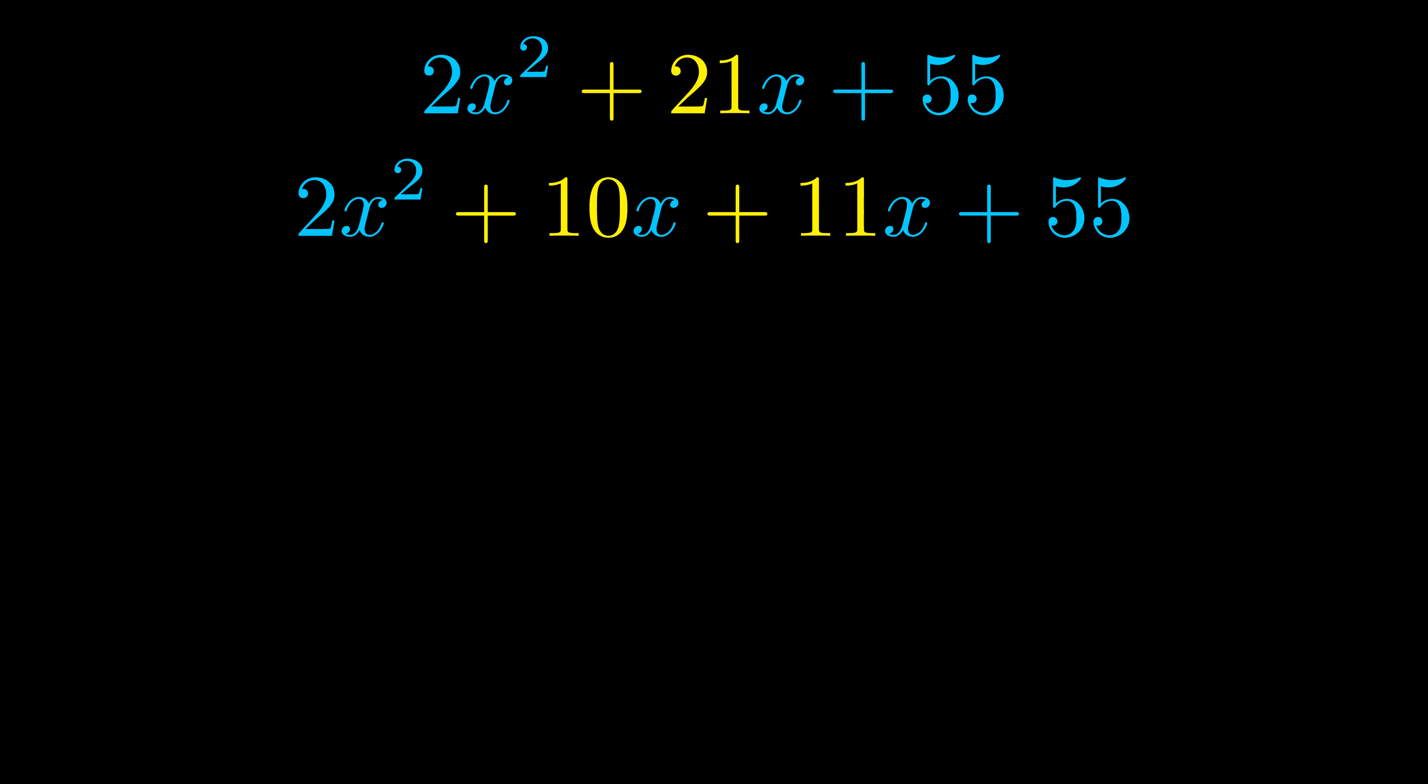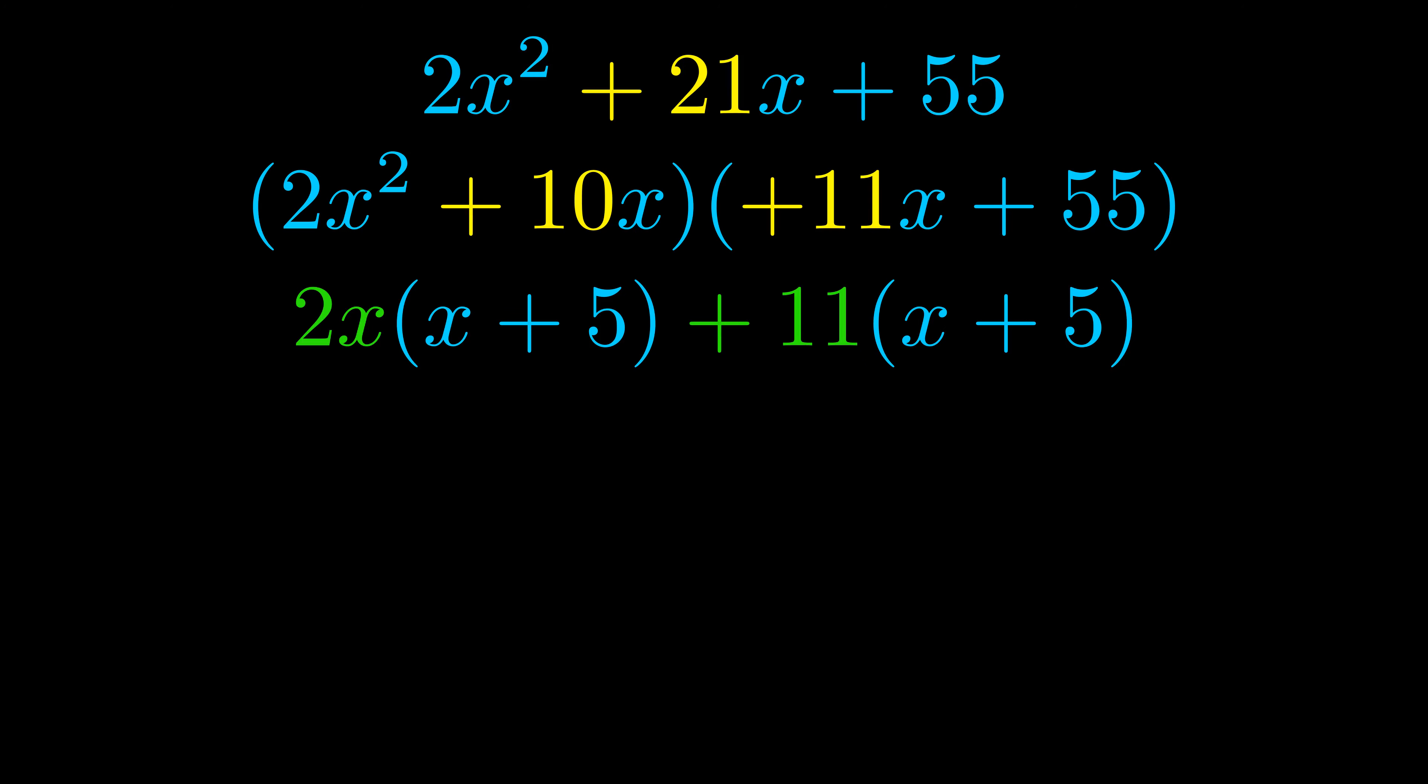Once we've done this we go ahead and we put parentheses around the first term and the last term and we do that so that we can take the greatest common factor out of both terms. We can see the greatest common factor is now outside in green. Notice also how what remains inside of the parentheses is the same in both cases.